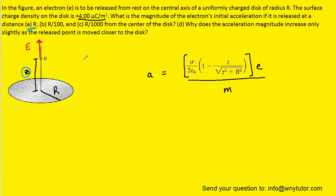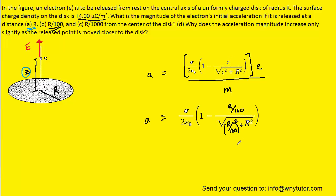Moving on to part B: the distance from the electron to the center of the disk is R divided by 100, represented by Z. We substitute R over 100 in for both Z's in the acceleration formula. The Z that was being squared becomes R squared over 100 squared, and of course 100 squared is 10,000.